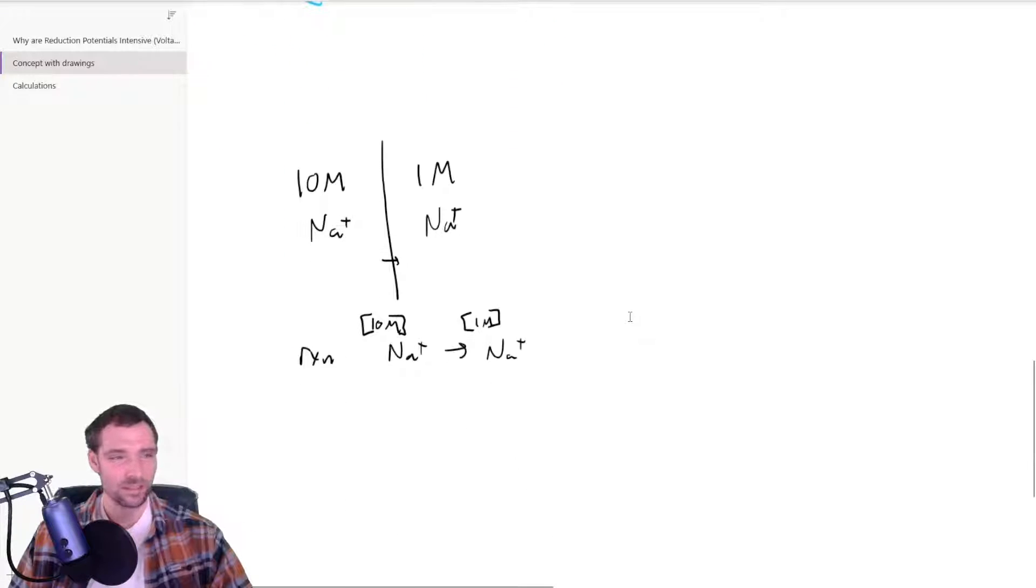Also, one other thing to keep in mind is that there's these things called electrochemical gradients. You'll see this in biology when they talk about neurons, and you'll have two sides that have different concentrations. Some of these are going to flow over from the high concentration to the low, and then it'll be like a mismatch of the balance of the charge.